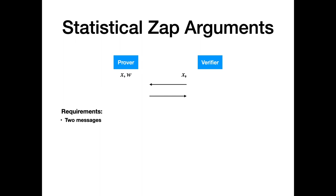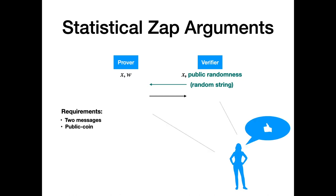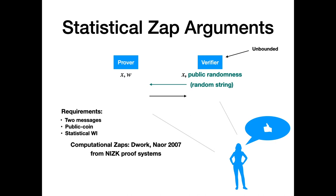A statistical zap has the following requirements. First, the protocol is only allowed to have two messages. Second, the verifier is not allowed to have any private state, and its message is only allowed to be a uniform random string — this property is called public coin, meaning any outside observer who observes the transcript should be able to decide whether it is accepting. Finally, we want the WI property to hold against computationally unbounded verifiers; we call this statistical WI. Computational zaps with computational WI were introduced by Dwork and Naur in 2007, but since then it has remained open whether statistical zap arguments exist.